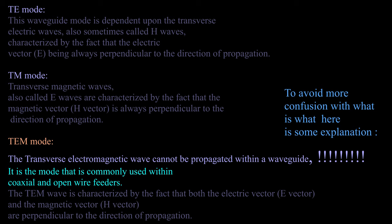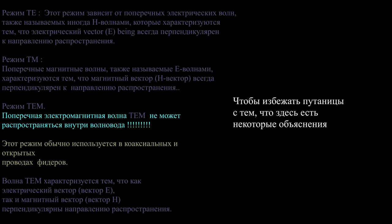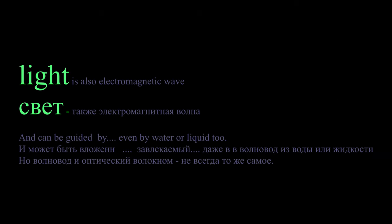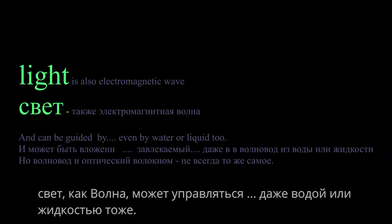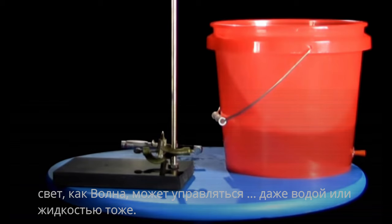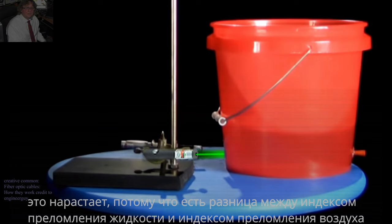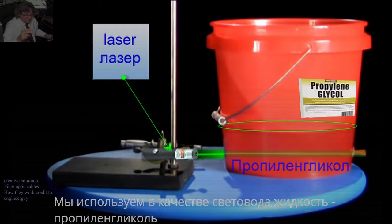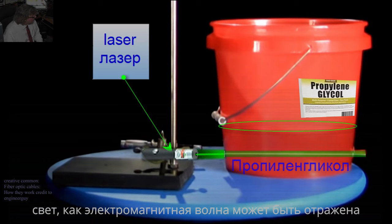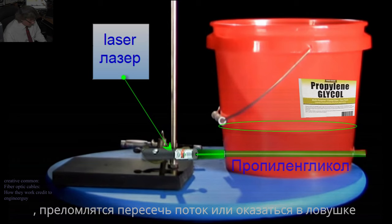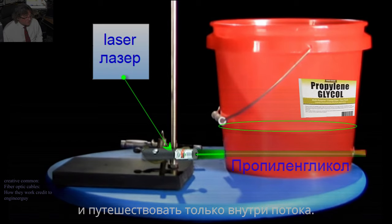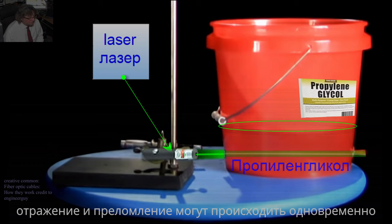Light is also electromagnetic wave and can be guided by water or liquid too. This occurs because there is a difference between the index of refraction of the guide material, here propylene glycol, and the outside, air in this case. Recall that any time light strikes a surface, it can either be absorbed by the material, reflected from it, or pass into and through it. The latter we call refraction.